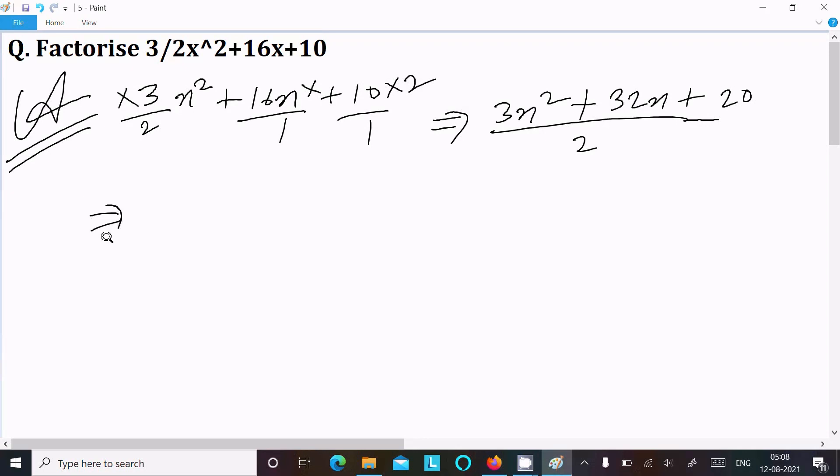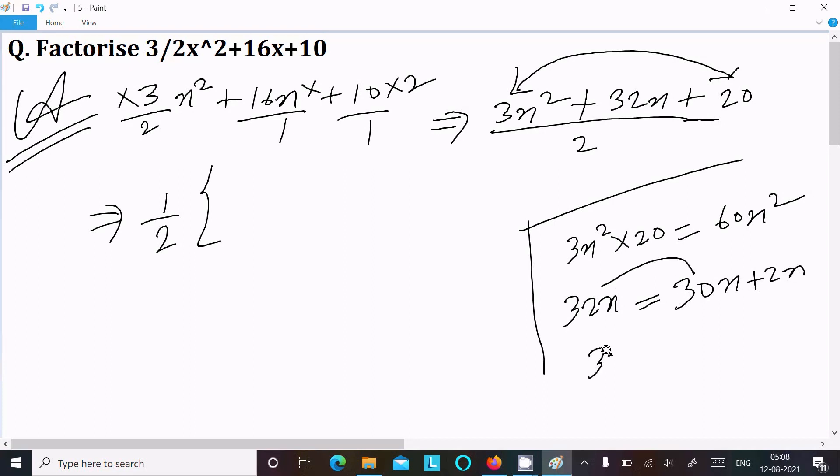Now thereafter we can write 1/2. So this here first term multiply with the last term, so 3x² into 20 that comes 60x². Now 32, write that 32x, so write here 30x plus 2x. So if you add it equals 32, and when you multiply 30x into 2x, it equals 60x². So these two are the same, so we can take this combination.